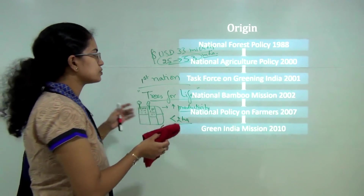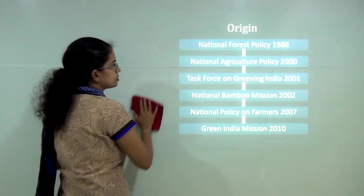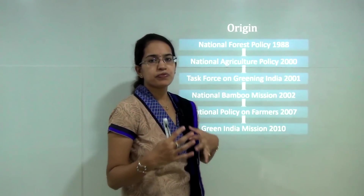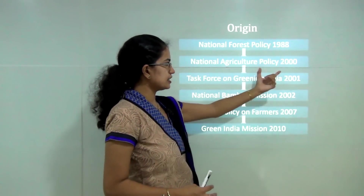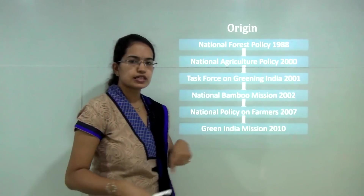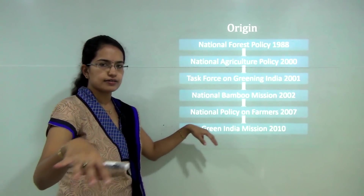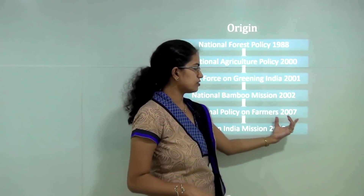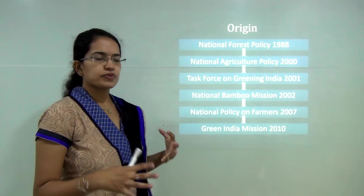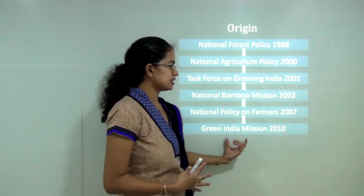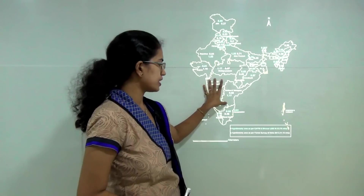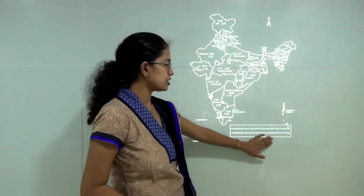The origin of the National Agroforestry Policy can be traced to the National Forest Policy of 1988, which first discussed agroforestry ideas. This was followed by the Agricultural Policy 2000, Greening India 2001, Bamboo Mission 2002, the Policy on Farmers 2007, and finally the Green India Mission 2010. All these policies emphasized the need for agroforestry. As a result, the 2014 policy was laid down based on surveys conducted by CMRI and the Forest Survey of India.